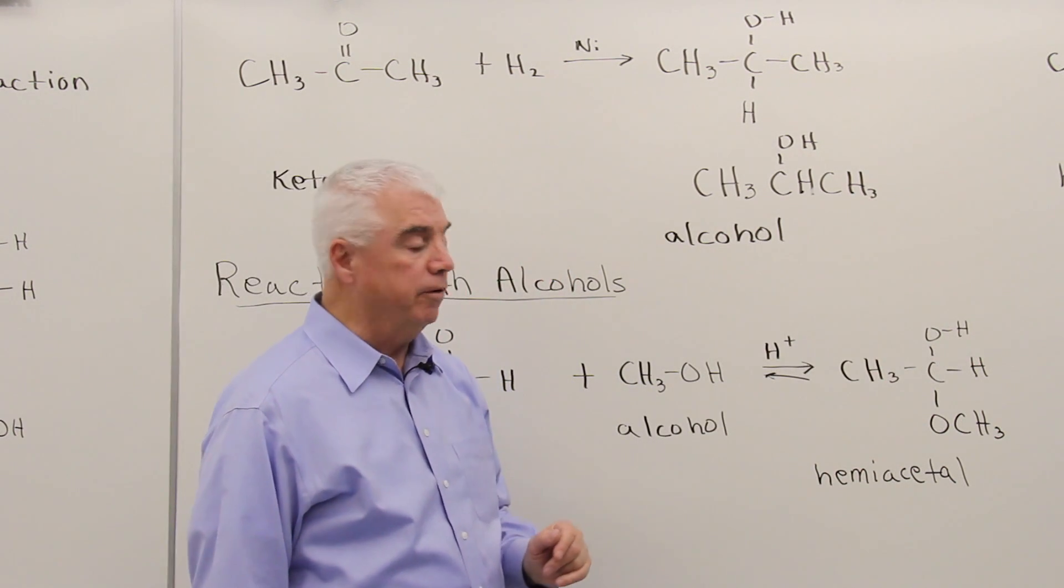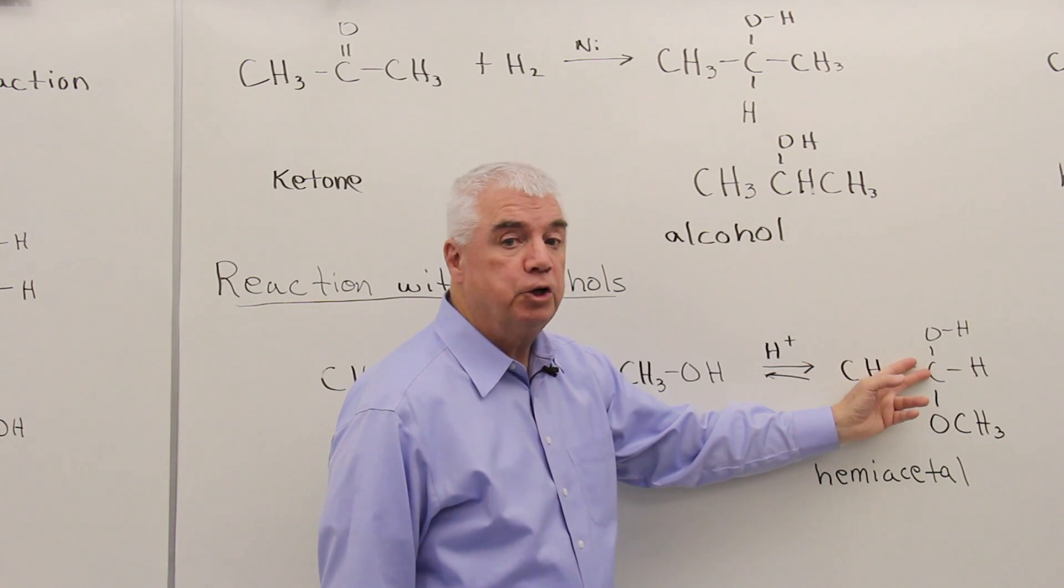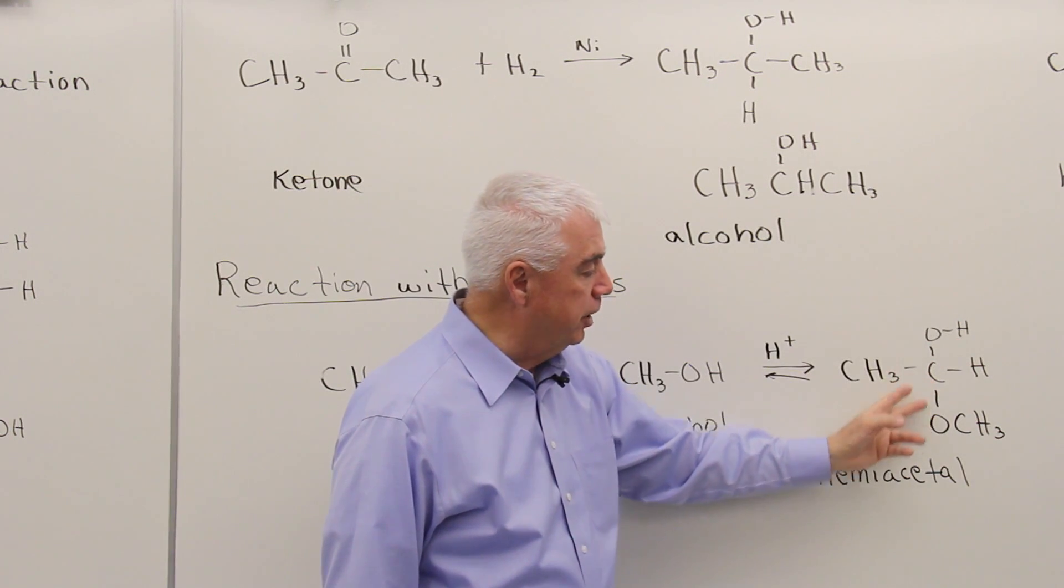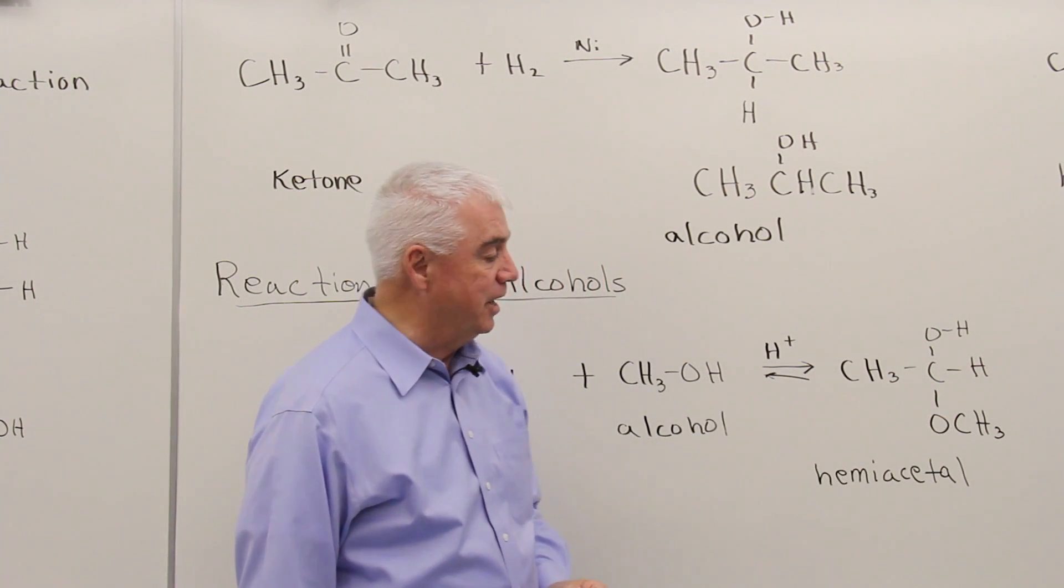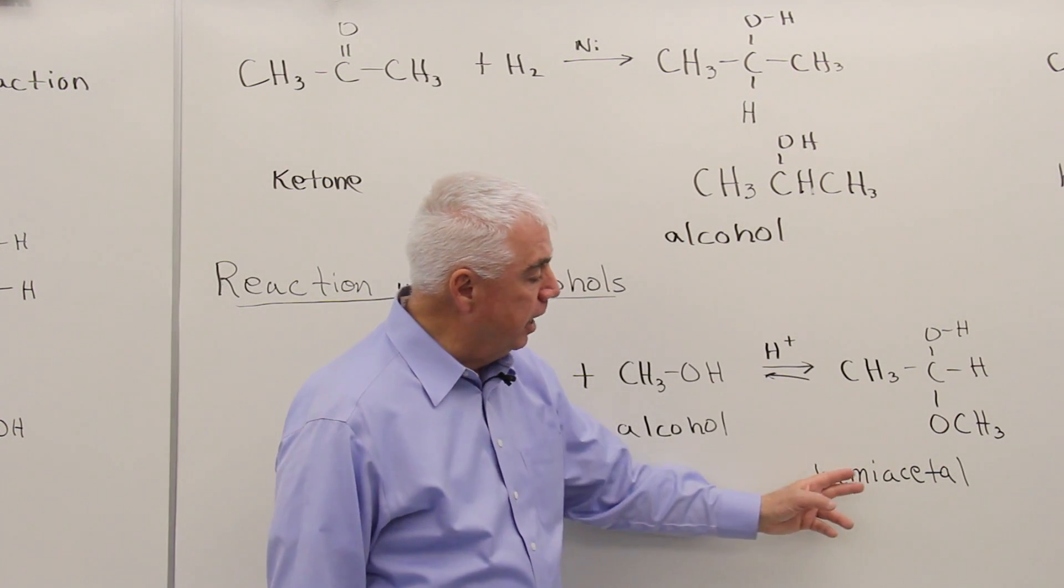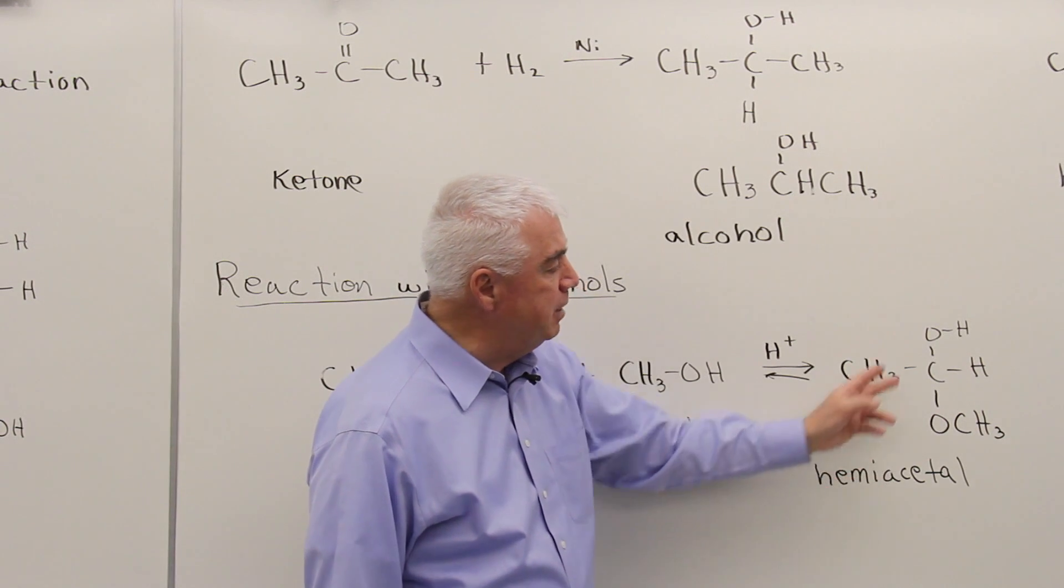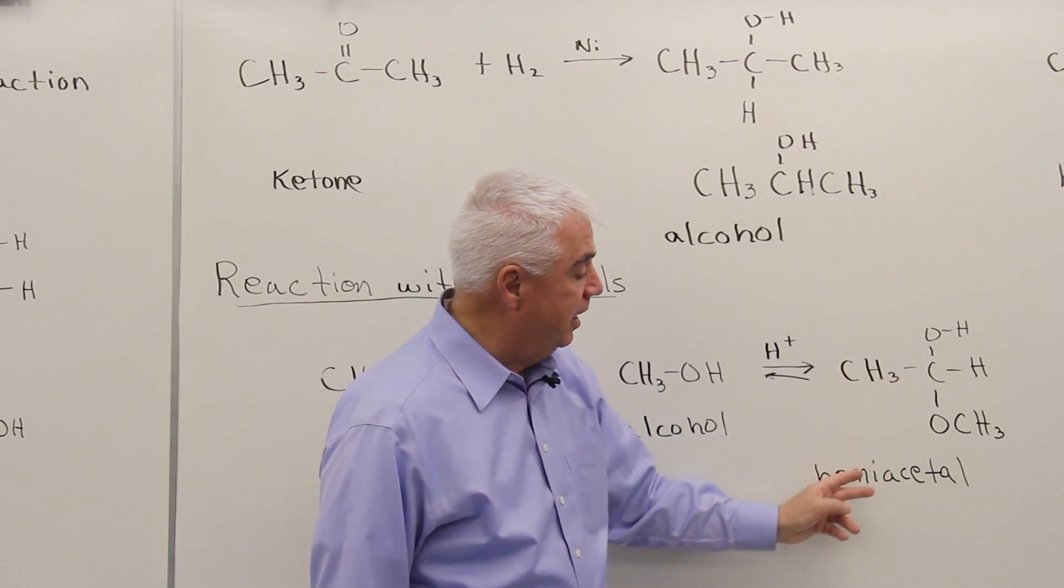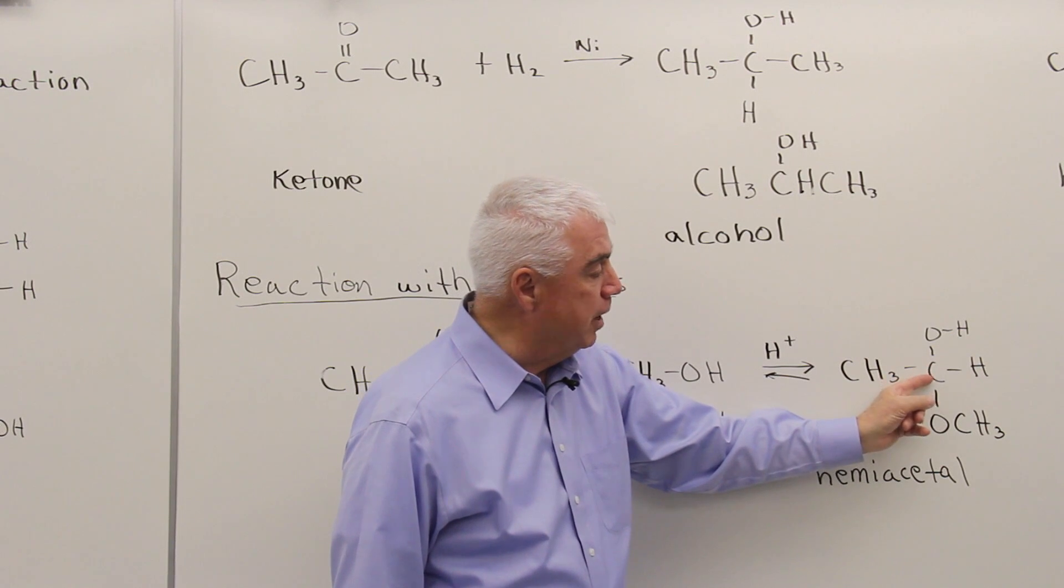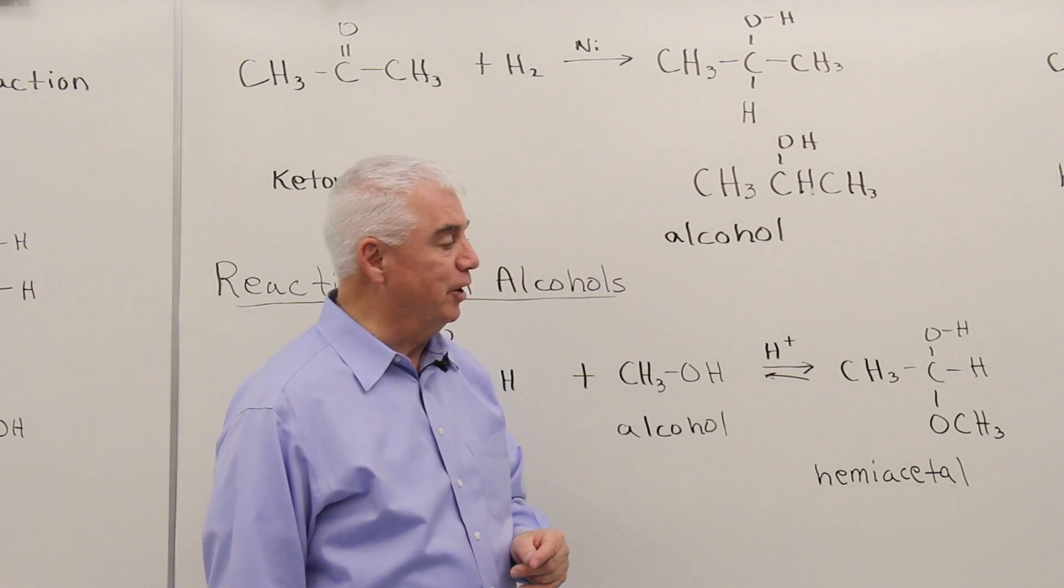I've drawn it in sort of an expanded form. And you can see that we now have a carbon that was originally the C double bond O. But it's got an OH and an OCH₃ attached. That's called a hemiacetal. And I remember hemiacetal in two ways. I remember that hemi means an OH, and acetal begins with A, and that reminds me that this carbon has a hydrogen because it was originally an aldehyde.